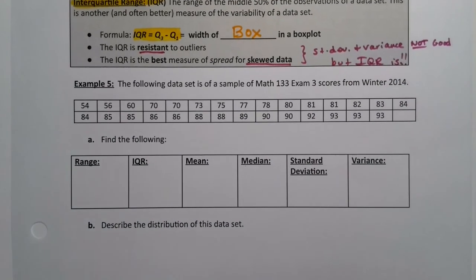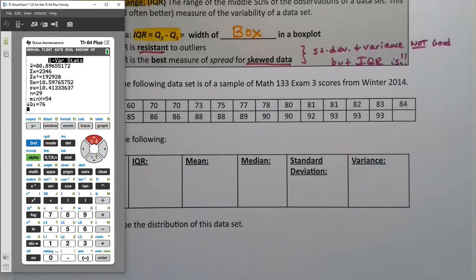So let's look at a data set right here. We have a data set which is a sample of MAP-133 exam three scores from winter 2014, 29 of them for the size. We already saw these data before, it's the same data set we were just working with. We want to find the range, the IQR, the mean, the median, standard deviation, and the variance.